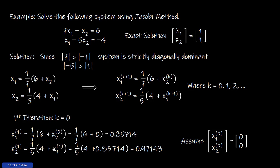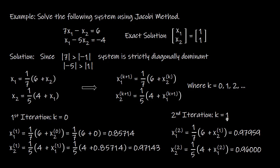The first approximate solution of X1 is computed as 0.85714, and we use this value in the second equation to get the first approximate solution of X2, which is 0.97143. For the second iteration (k = 1), we use the first approximate solution of X2 to calculate the second approximate solution of X1, which is 0.97959. Then we use this second approximate solution of X1 to get X2^(2) = 0.99600.